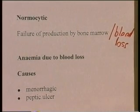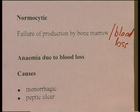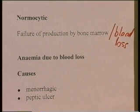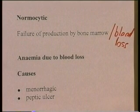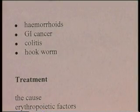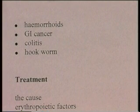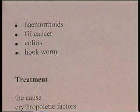Some causes of anemia due to blood loss include excessive menstrual periods, peptic ulcers that can lose small amounts of blood over a long period of time, haemorrhoids, gastrointestinal cancers, colitis, and hookworm infestation — hookworms hooking into the inside of the intestine and drinking blood.